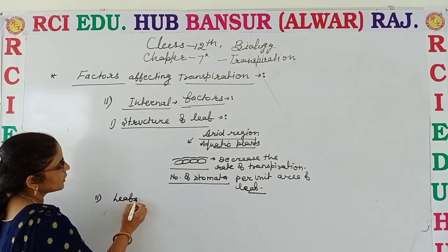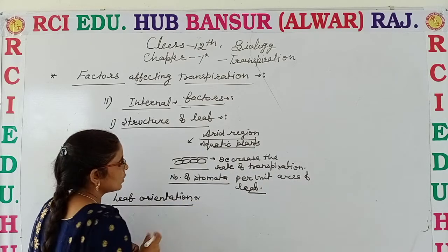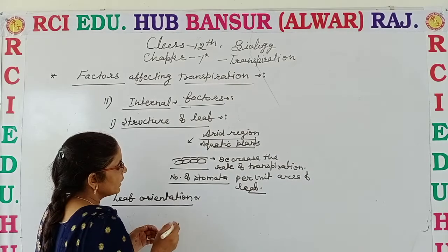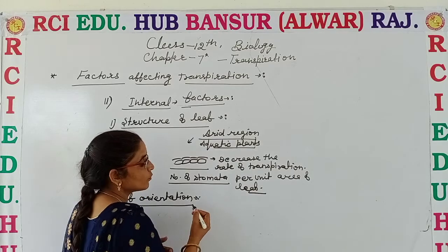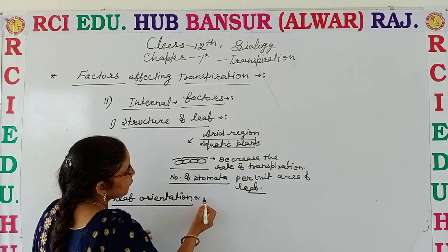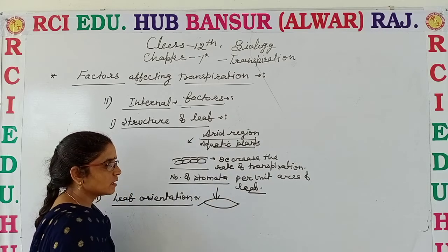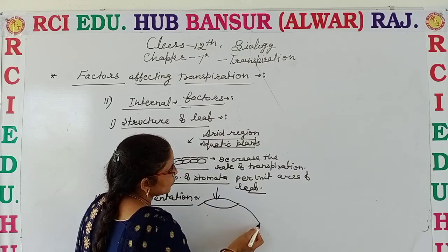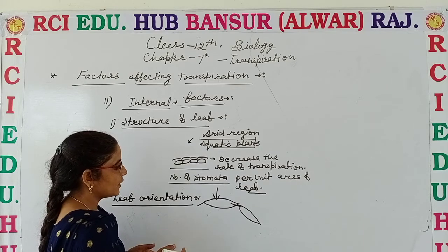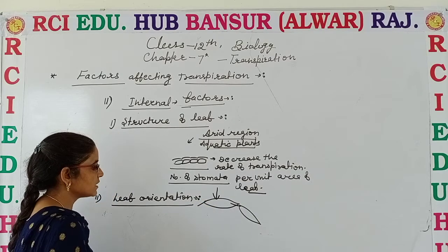The second internal factor is leaf orientation — the position of the leaf as attached to the plant. It varies from plant to plant, species to species, and according to the region. If the leaves are perpendicular to sunlight, or at 45 degrees, or at a different angle to sunlight, the rate of transpiration is also affected. So leaf orientation is also an important factor affecting the rate of transpiration.